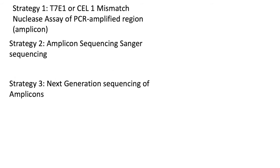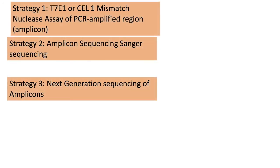Strategy one, after cleaning up your PCR products, you can use either a mismatched cleavage assay, or you can use Sanger amplicon sequencing, or the third option is to use next generation sequencing. Let's look at each of these in more details.